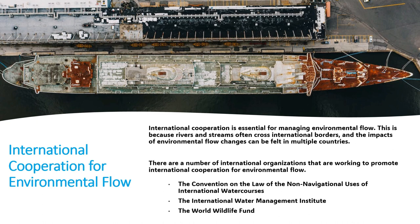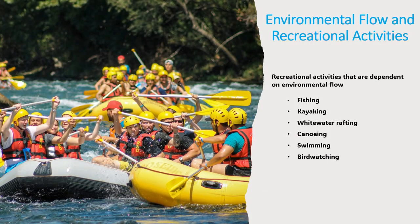Some of the benefits of international cooperation for environmental flow include helping to resolve conflicts over water resources — there are many such conflicts worldwide — and helping to protect shared river ecosystems, since rivers and streams often cross international borders and environmental flow changes can be felt in multiple countries. International cooperation can also help to promote sustainable water management practices, which is important because water is a vital resource that must be managed for long-term availability. Recreational activities dependent on environmental flow — such as fishing, kayaking, white-water rafting, canoeing, swimming, and bird watching — are only possible when we have good environmental flow.